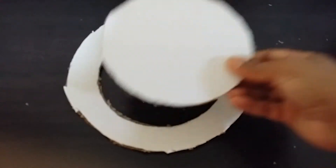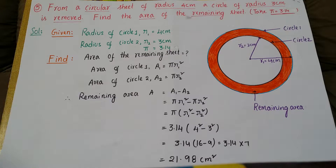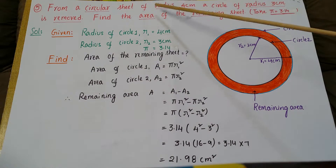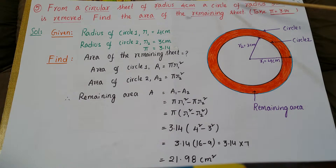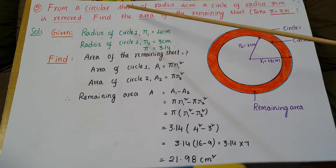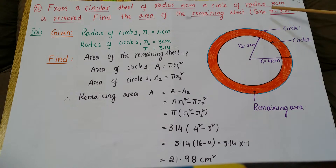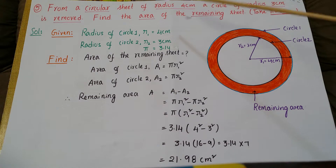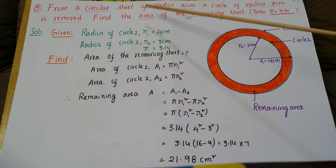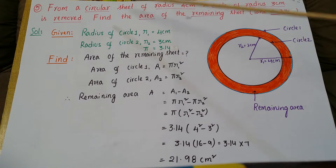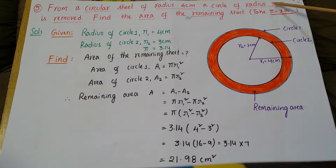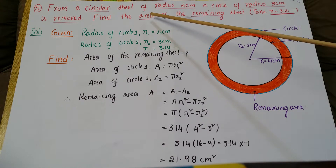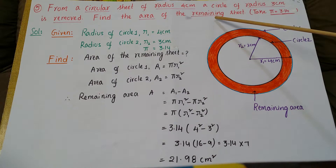The problem is from NCRT, fifth problem from exercise 11.3: 'From a circular sheet of radius 4 centimetres, a circle of radius 3 centimetres is removed. Find the area of the remaining sheet. Take pi equal to 3.14.' Before doing any word problems, first read the problem thoroughly and underline the given values — circular sheet of radius 4 centimetres and another circle of radius 3 centimetres that is removed.